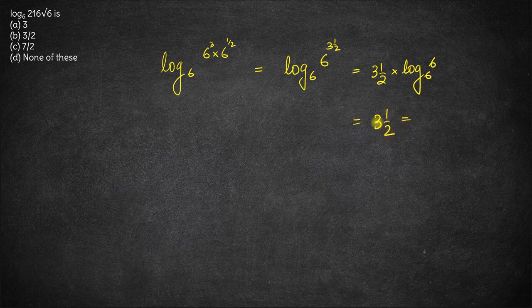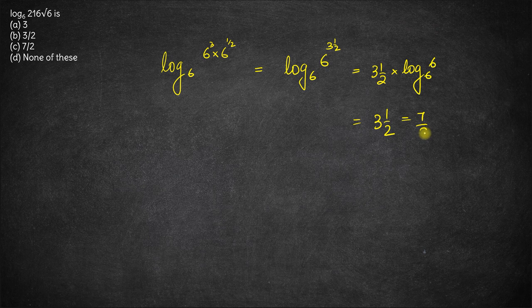3 and a half is effectively 2 into 3, which is 6, plus 1, equals 7 by 2. So the correct answer is option C. Thank you.